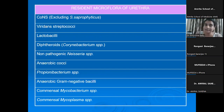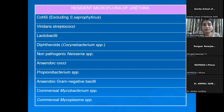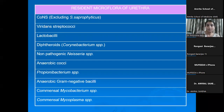These are the most common organisms comprising the normal flora of the urethra. If any of these organisms are grown and isolated, we generally give a report of 'normal urethral flora grown' — that's not considered a pathogen. These include coagulase-negative staphylococcus (excluding Staphylococcus saprophyticus, which is considered a pathogen in women of reproductive age group), viridans streptococci, lactobacilli, diphtheroids, non-pathogenic Neisseria species, anaerobic cocci, Propionibacterium, anaerobic gram-negative bacilli, commensal mycobacterium, and commensal mycoplasma species.